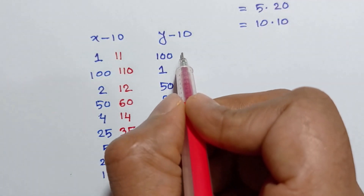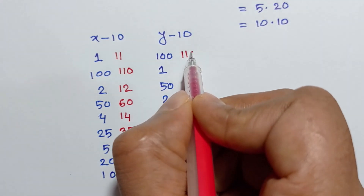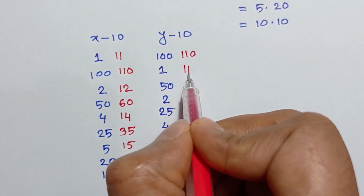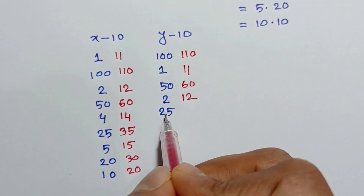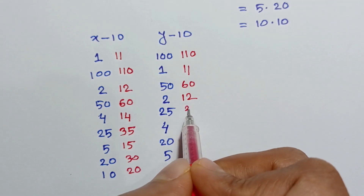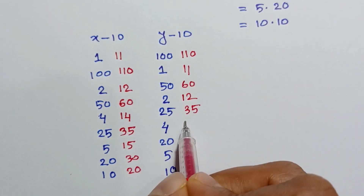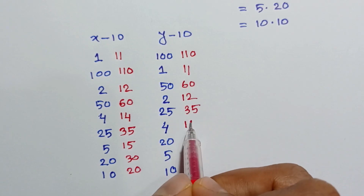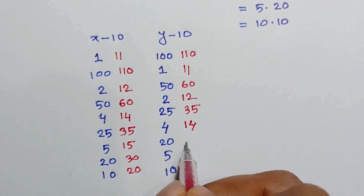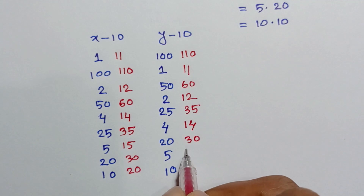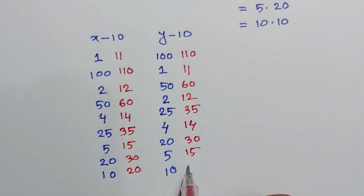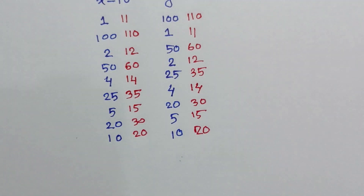Solving for y: when (y minus 10) = 100, y = 110; for 1, y = 11; for 50, y = 60; for 2, y = 12; for 25, y = 35; for 4, y = 14; for 20, y = 30; for 5, y = 15; for 10, y = 20.